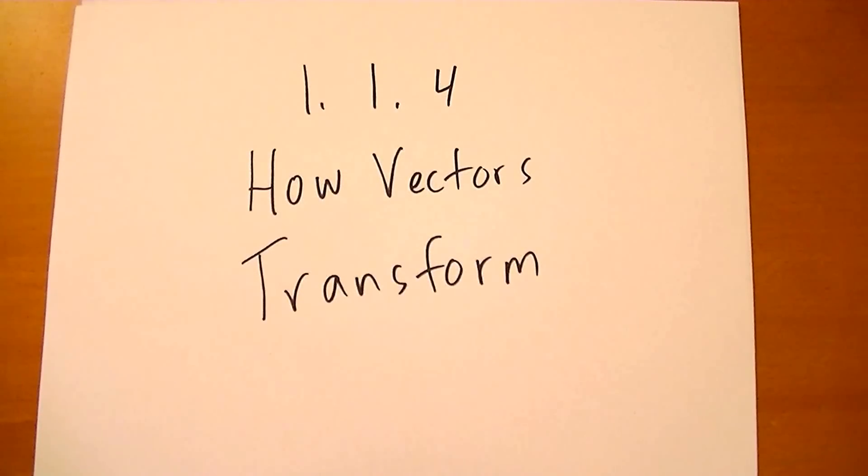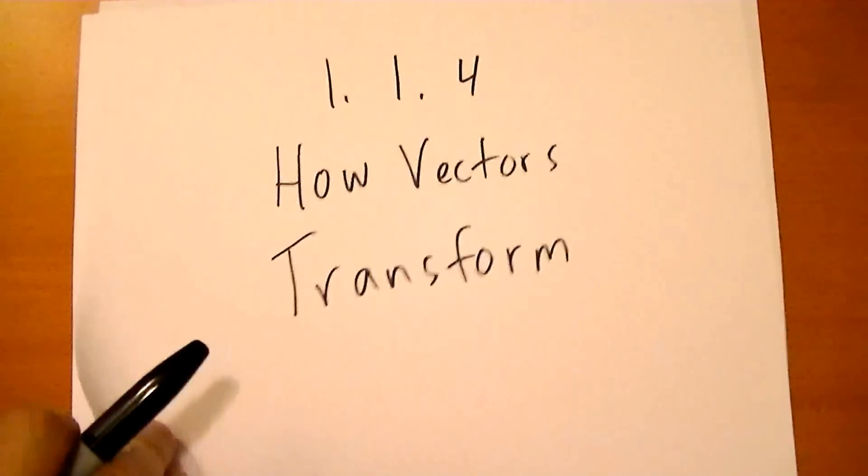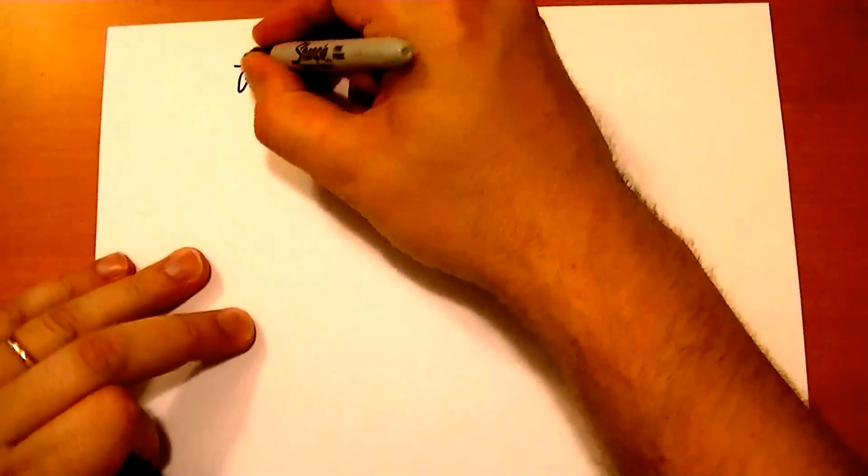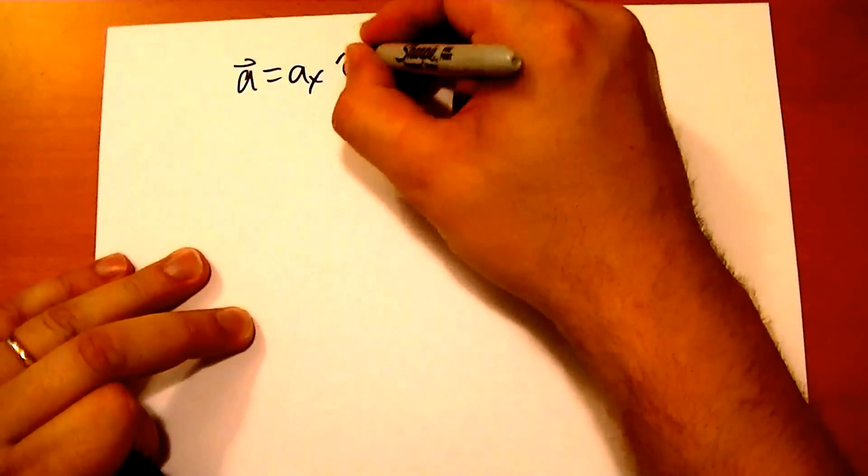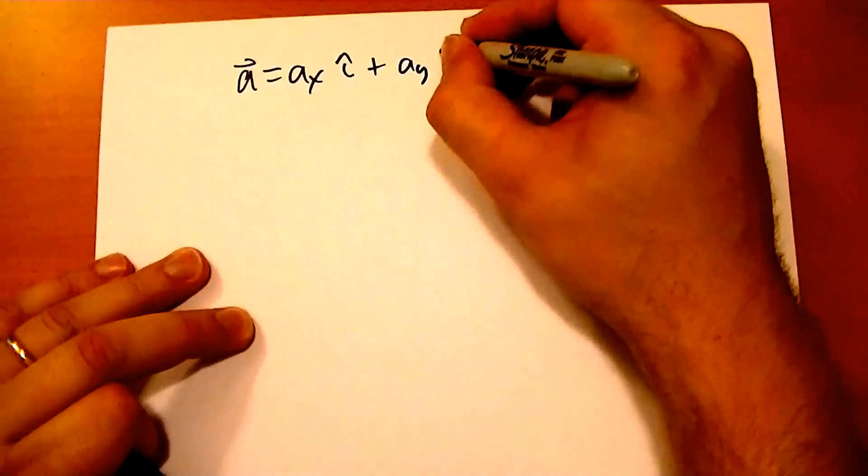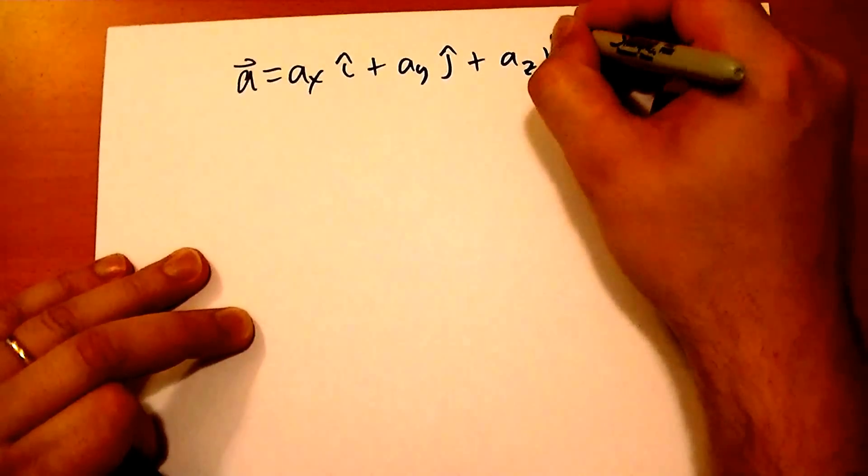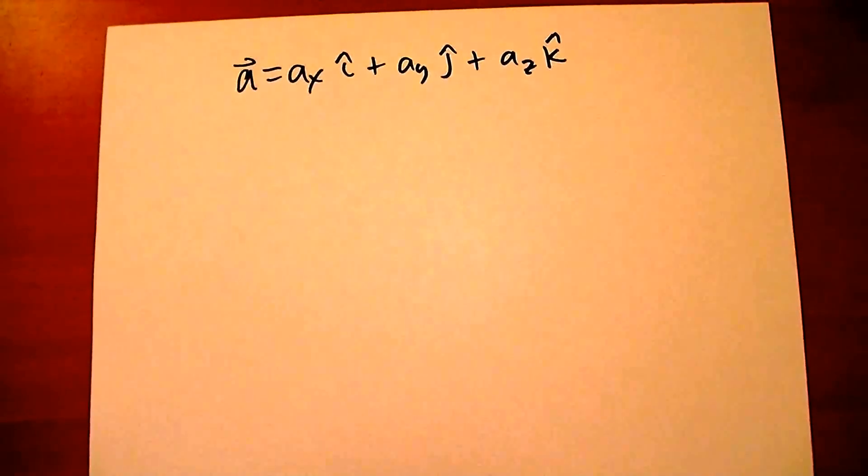Section 114, How Vectors Transform. If you want to start with a vector that is expressed in some basis vectors, and what happens if you want to express this in a different set of basis vectors?